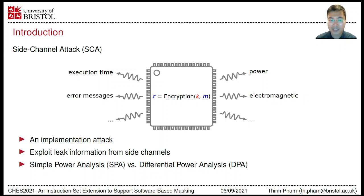Power side-channel attacks are generally categorized into two types: Simple Power Analysis (SPA) and Differential Power Analysis (DPA). SPA can potentially reveal sensitive information by observing the power consumption of one single execution. In contrast, DPA possibly extracts sensitive information by statistically analyzing numerous power measurements of executions on different inputs.